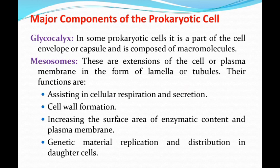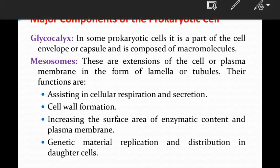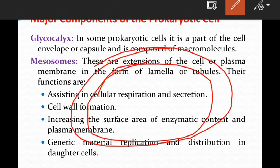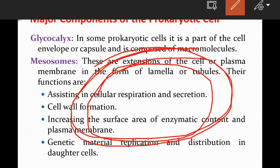And then the major components of prokaryotic cells. The first one is glycocalyx — in some prokaryotic cells it is a part of the cell envelope or capsule, and it is composed of macromolecules. Glycocalyx is essentially the outer covering or capsule of the prokaryotic cell.